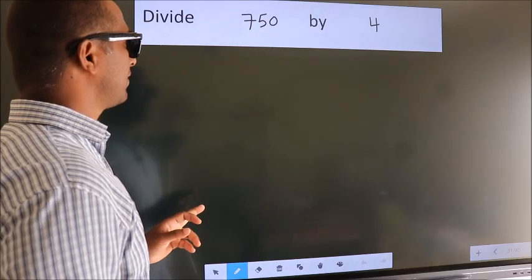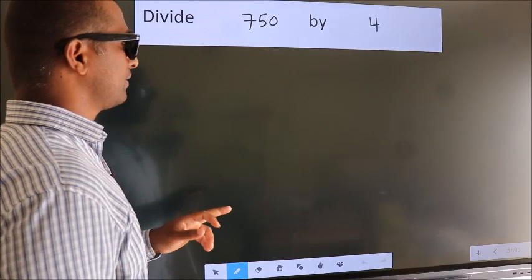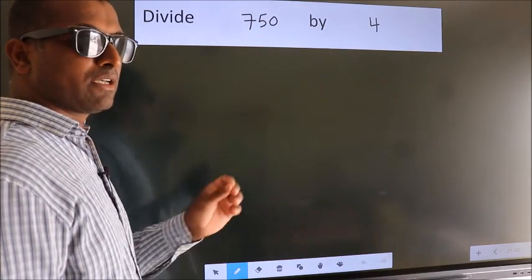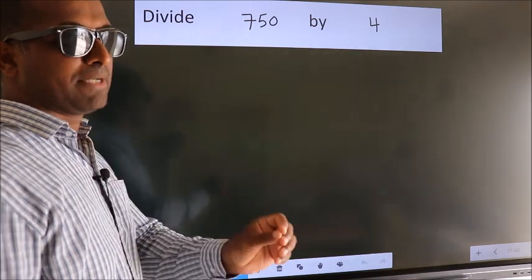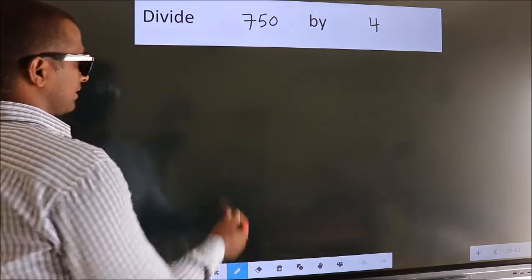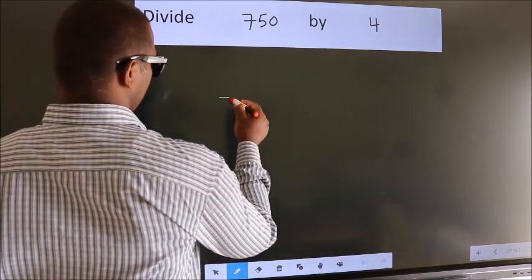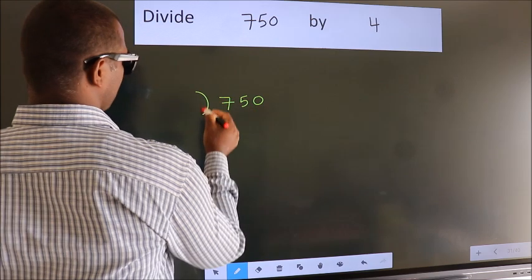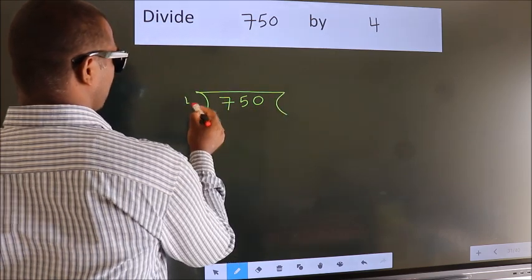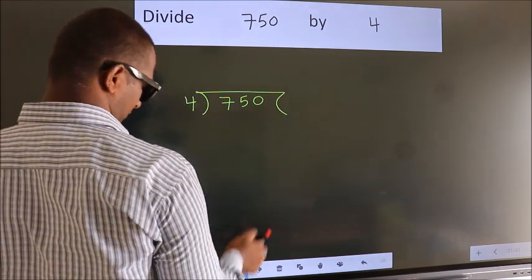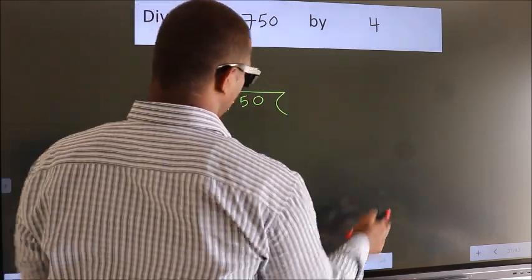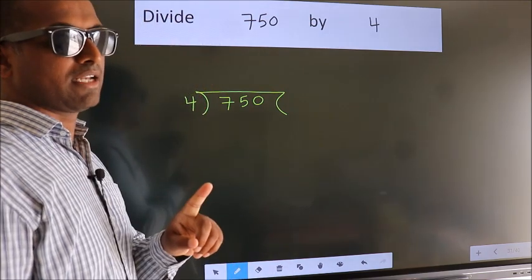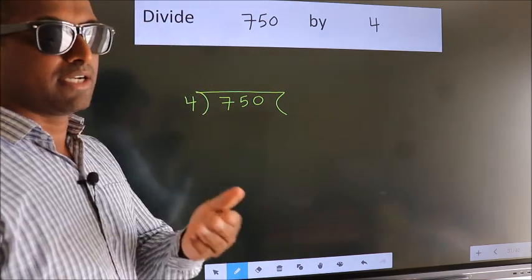Divide 750 by 4. To do this division, we should frame it in this way: 750 here, 4 here. This is your step 1.